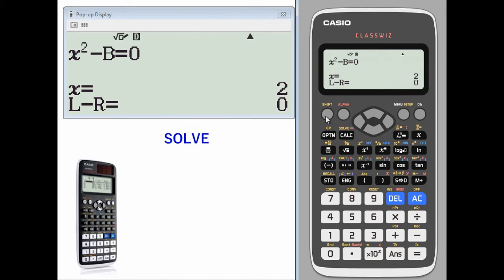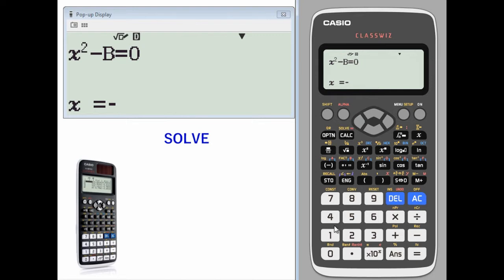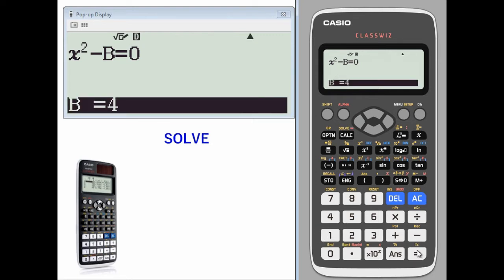Another possible solution is negative two. To find the other solution, let's solve again. We'll start with an initial x value of negative one and a b value of four.